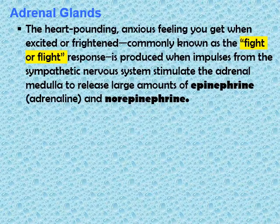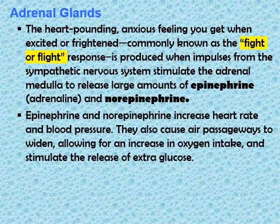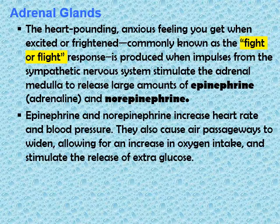The heart-pounding, anxious feeling you get when excited or frightened — commonly known as the fight-or-flight response — is produced when impulses from the sympathetic nervous system stimulate the adrenal medulla to release large amounts of epinephrine (adrenalin) and norepinephrine. Epinephrine and norepinephrine increase heart rate and blood pressure, cause air passageways to widen allowing increased oxygen intake, and stimulate the release of extra glucose.